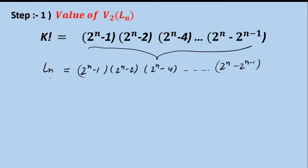I'll calculate the maximum power of 2 dividing capital L(n) by taking common factors out. I take 2 common from the first term, 4 common from the second term, and so on. I take out 2 raised to the power of (n minus 1) as a common factor, giving an exponent sum of 1 plus 2 plus 3 up to n minus 1. The remaining terms are then written out.